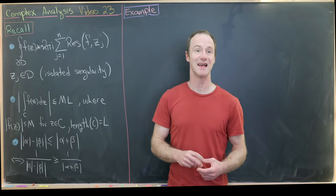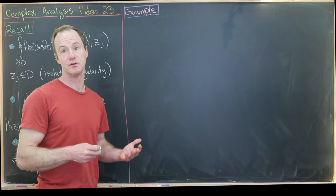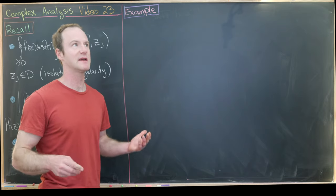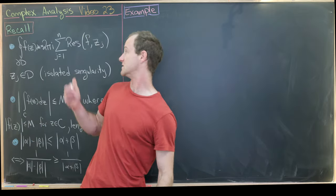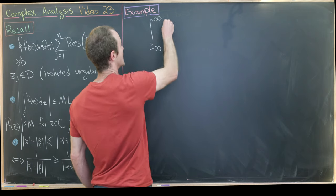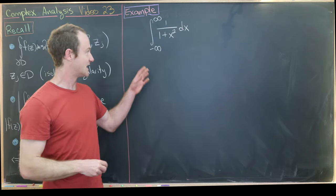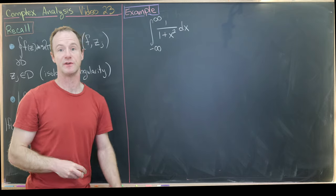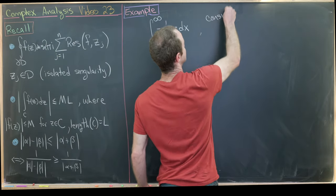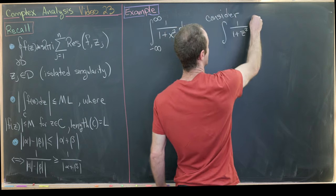Now let's jump into some examples. The first example we're going to do could be done fairly simply with real analytic methods using the inverse tangent function, but it makes a nice warm-up. We're going to find the integral from minus infinity to infinity of 1 over (1 + x²) dx. Instead of looking at this as a real integral, we'll push it into the complex plane and consider the integral of 1 over (1 + z²) dz.